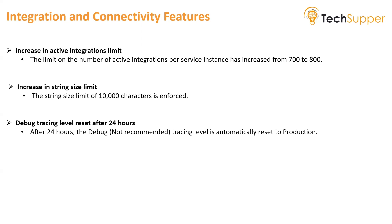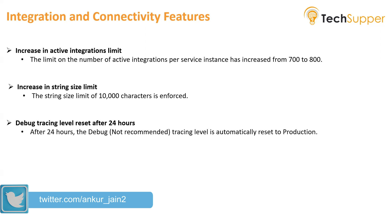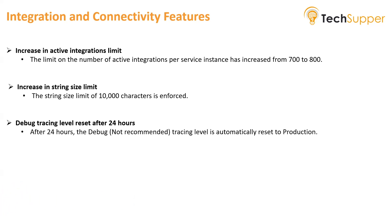Third, debug tracing level reset after 24 hours. Consider a scenario where a developer activates an integration in debug mode — the 'not recommended' tracing level — to test their integrations and see what data is being received and sent. If they forget to reset the tracing level after testing, all future runs would continue in debug mode. After this update, Oracle will automatically reset the tracing levels for all integrations to production mode, saving memory and runtime for each integration.